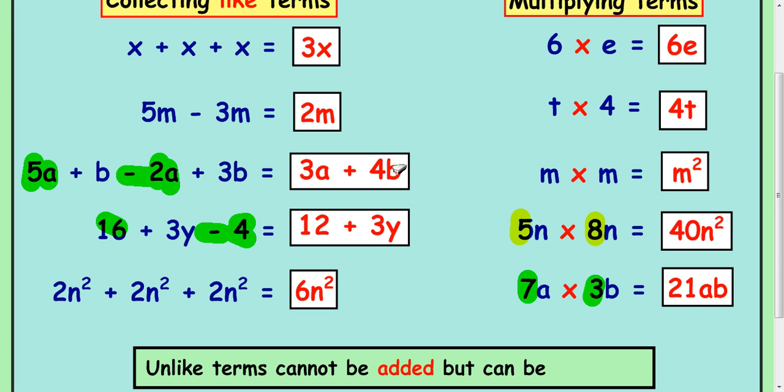You can't make it 7ab. You have to keep them separate. But they can be multiplied. In this case here at the bottom, 7a times 3b, you can make 21ab.